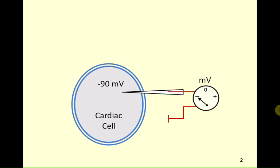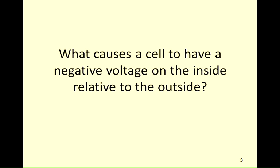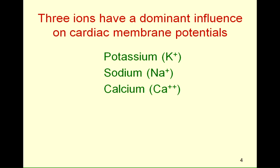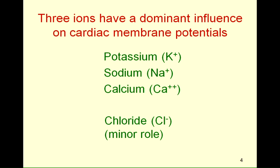By definition, we assume that the outside of the cell is 0 millivolts. The question we want to ask is: what causes a cell to have a voltage that is negative on the inside relative to the outside? In cardiac cells, there are three ions that have a dominant influence on the membrane potential: potassium, sodium, and calcium ions. Chloride ions also play a role, but a relatively minor one, so for the sake of this lecture, we will ignore the contribution of chloride.